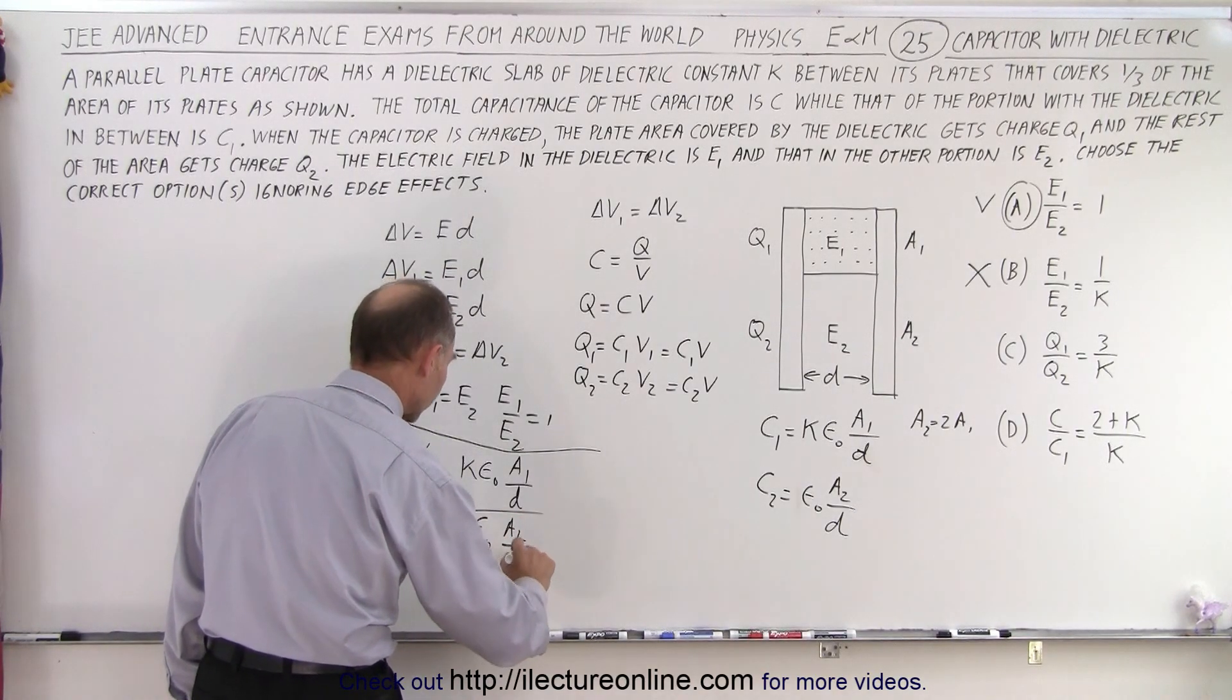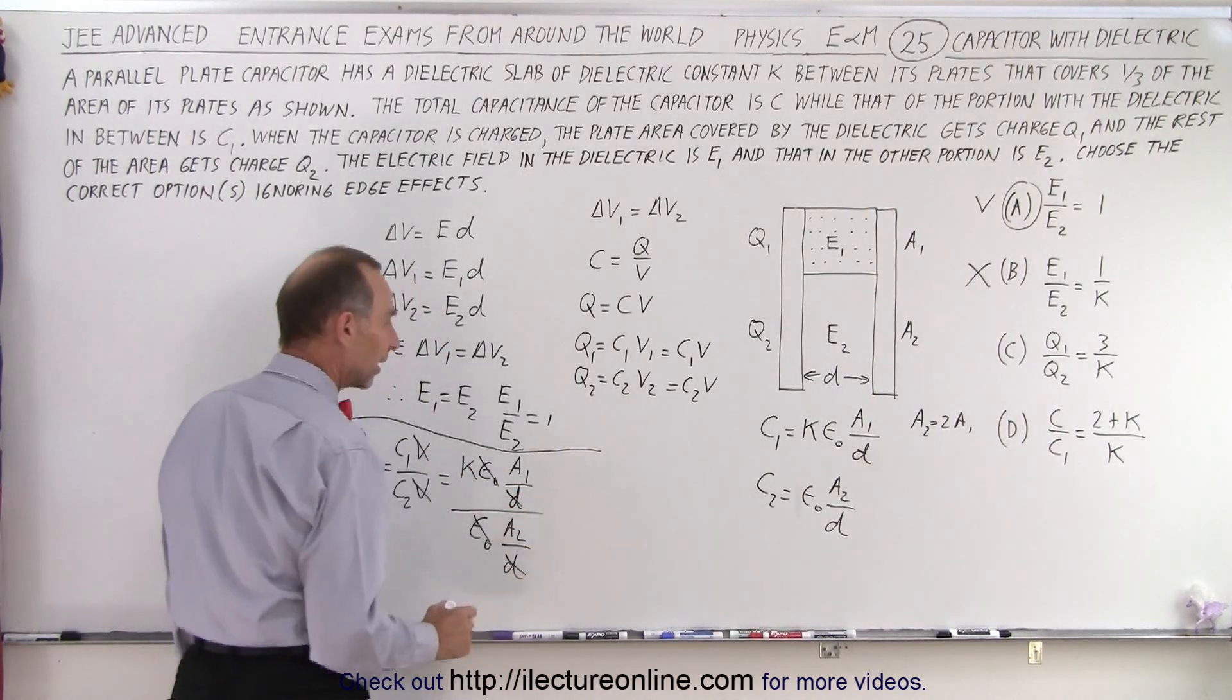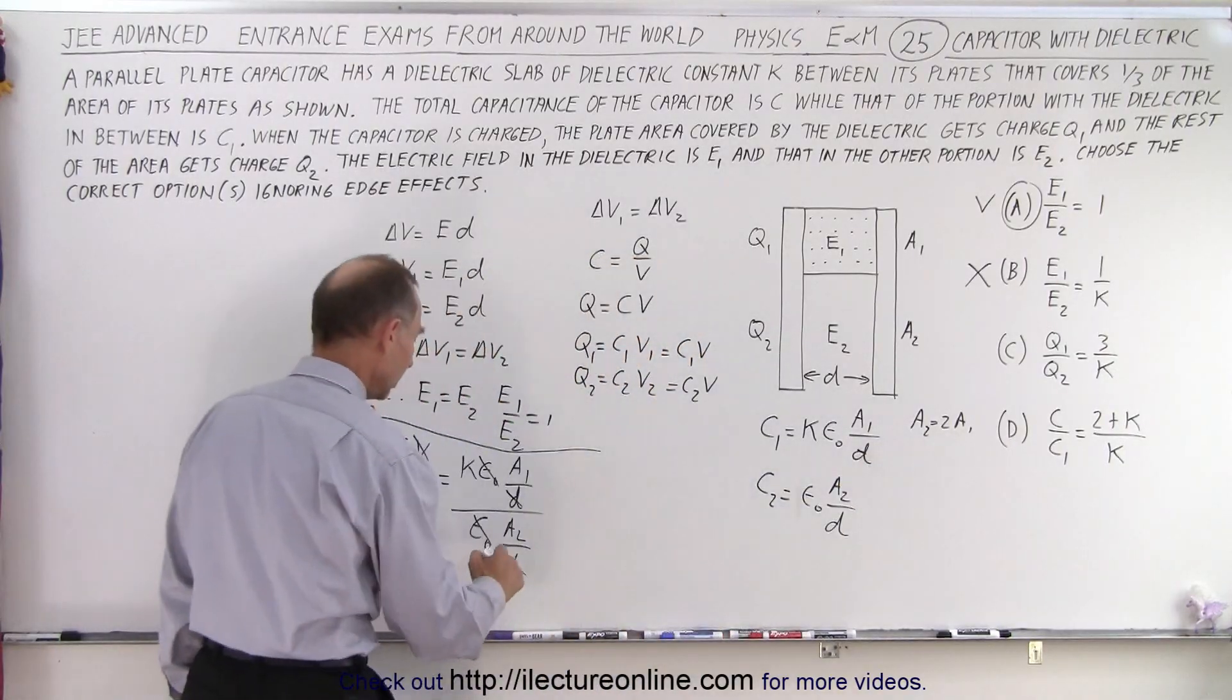Notice that the epsilon naught cancels out, the D cancels out, and notice that A2 is twice A1.